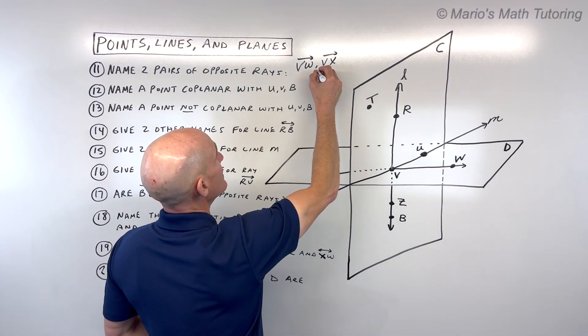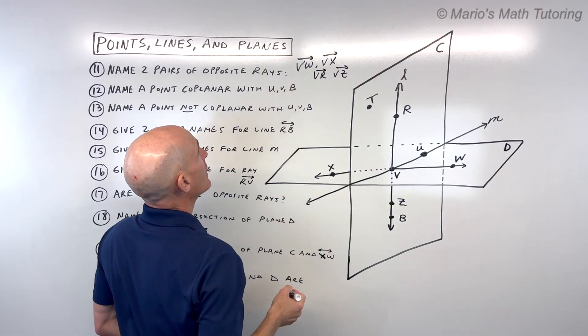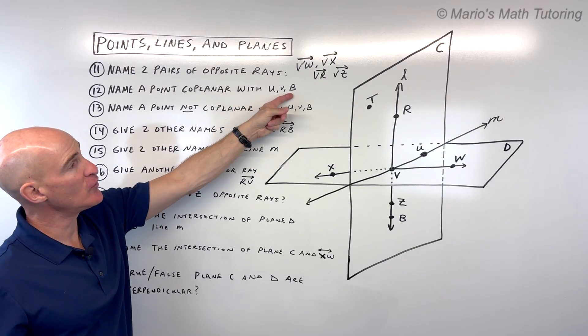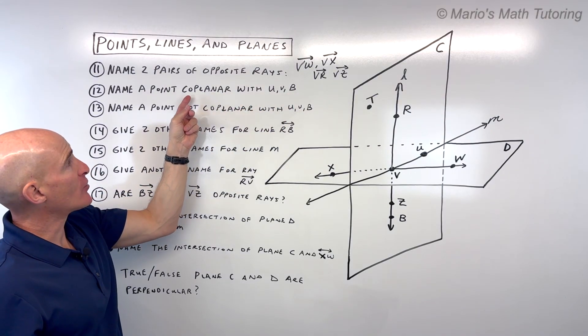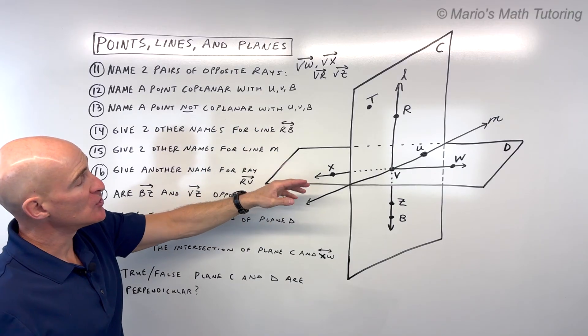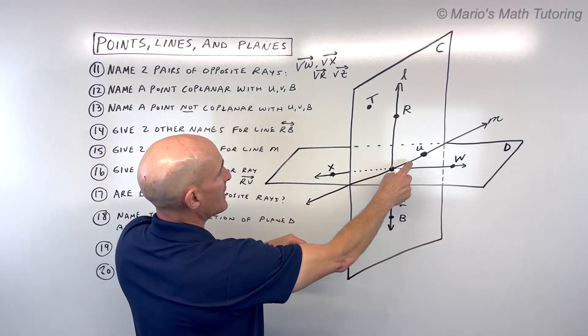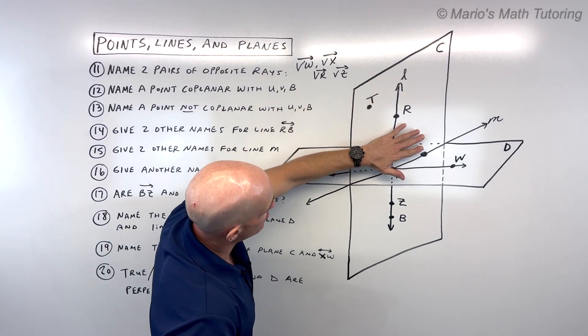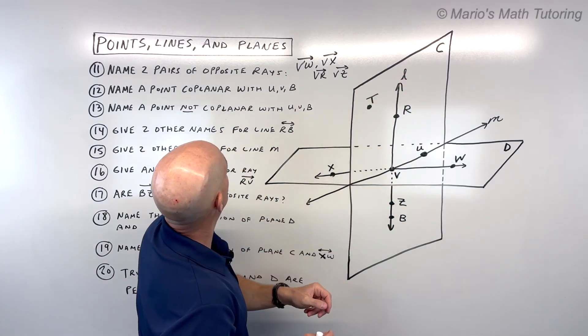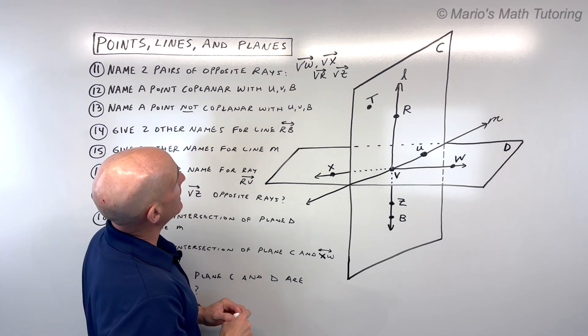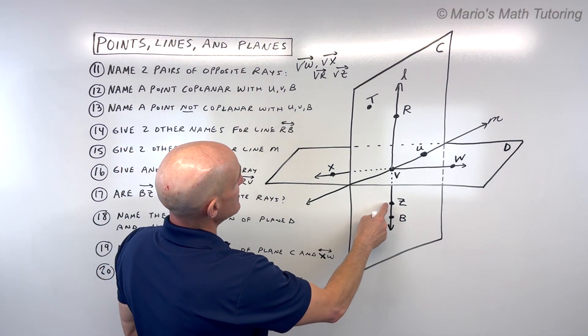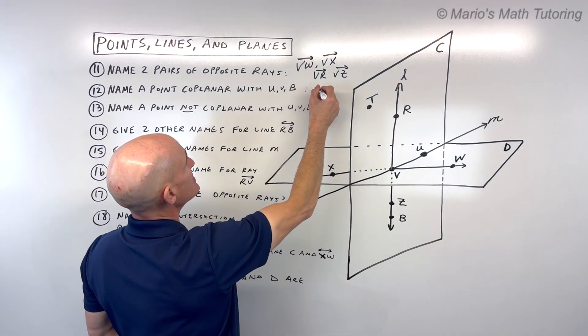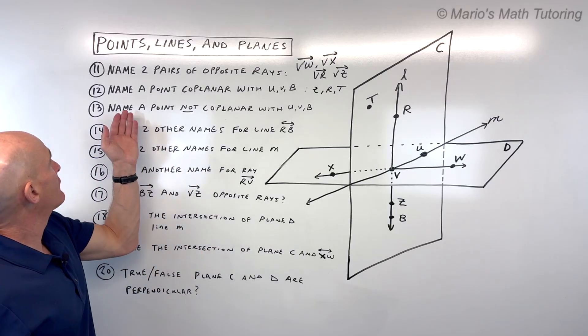Another pair would be VR and VZ. For number 12, name a point that's coplanar with U, V, and B. Co means same, planar means plane. Do you see some points in the same plane as U, V, and B? U, V, and B are in this vertical plane, plane C. Another point that would be in that same plane, you could say Z, or R, or T.